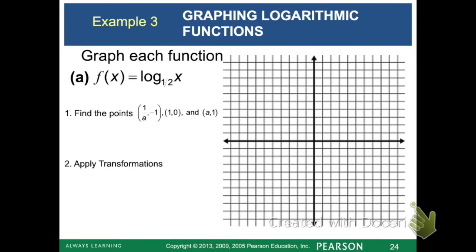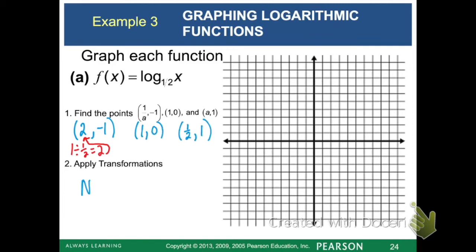Example 3, part a: we're going to graph f of x equals log base 1/2 of x. First, we identify the three points. Our a is 1/2, so for the first point, 1 divided by 1/2 gives us 2, so we get the point 2 comma negative 1. The next point is 1 comma 0, and the next is 1/2 comma 1. Looking at the equation, we don't have an h or k value, so no transformations.